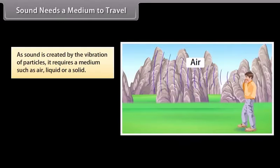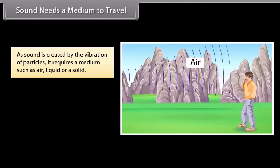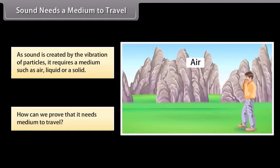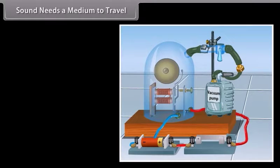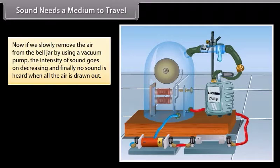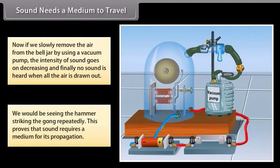Sound needs a medium to travel. As sound is created by the vibration of particles, it requires a medium such as air, liquid, or a solid. But how can we prove that it needs medium to travel? Let's see. Look at this figure. Here an electric bell is suspended inside an airtight glass bell jar connected to a vacuum pump. As the electric bell circuit is completed, the sound is heard. Now if we slowly remove the air from the bell jar by using a vacuum pump, the intensity of sound goes on decreasing. And finally, no sound is heard when all the air is drawn out. We would be seeing the hammer striking the gong repeatedly. This clearly proves that sound requires a medium for its propagation.